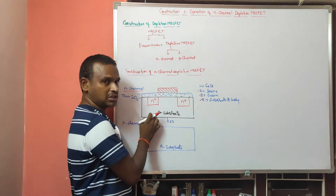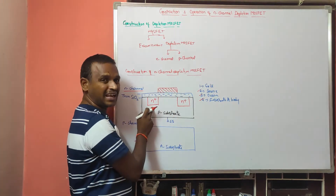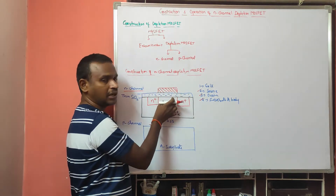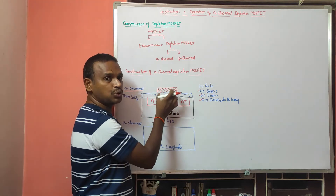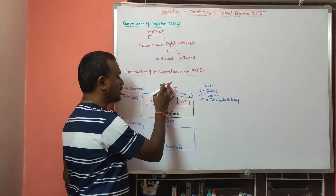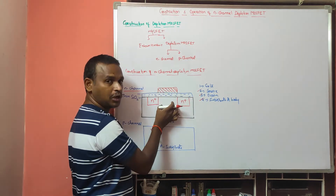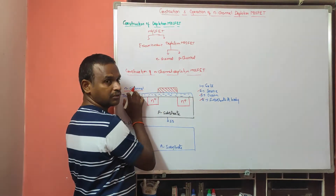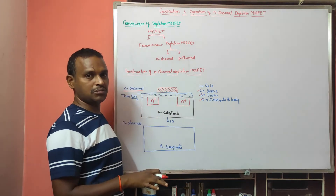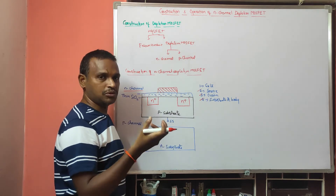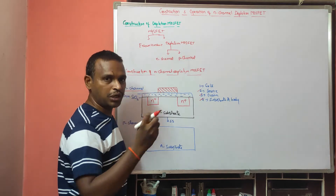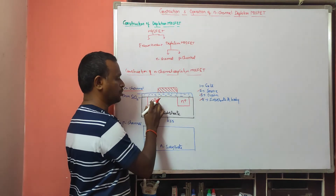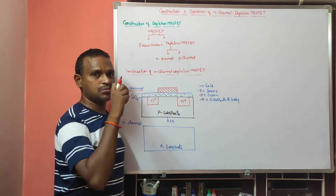To construct the N channel depletion MOSFET, we first take a P substrate, then form N+ and N+ to make the source and drain. Next, we need the gate terminal. To form the gate terminal, between the gate and substrate there must be a SiO2 layer. The key difference between enhancement MOSFET and depletion MOSFET is that in depletion MOSFET, we compulsorily form the channel between source and drain physically during construction.